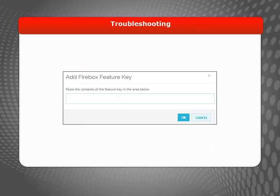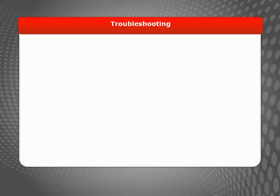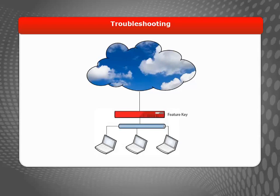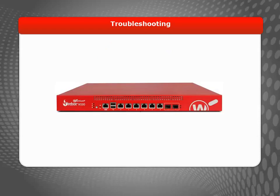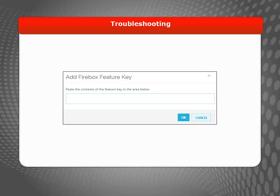If you have followed all these steps but still can't browse to the internet, it could be a problem with the device feature key. If you did not install the feature key in the wizard, you must do it now. If the Firebox doesn't have a feature key, it will only allow one user to connect to the internet at a time. If there are multiple computers on your trusted network, there is no guarantee that your computer will be the one to get internet access. To resolve this problem, connect your computer directly to the trusted interface and reboot the Firebox — this will make sure that your computer gets the first connection. Then you can install the feature key and verify internet access from your computer.